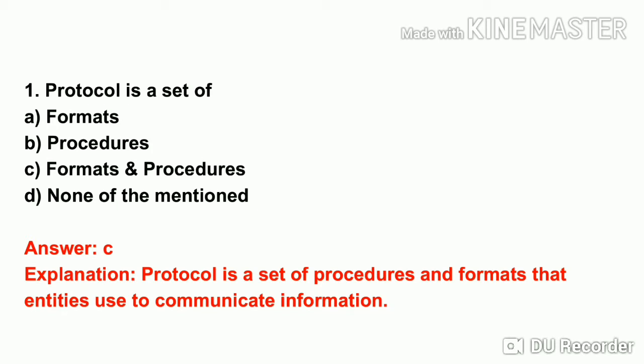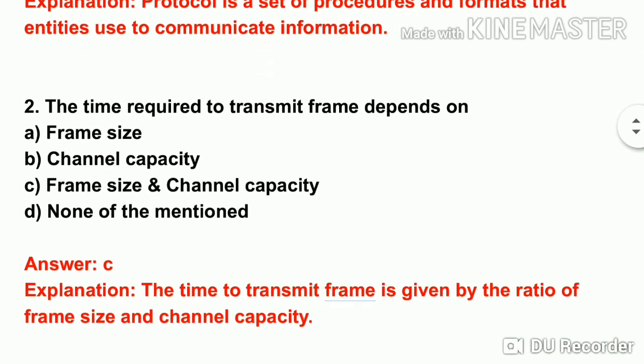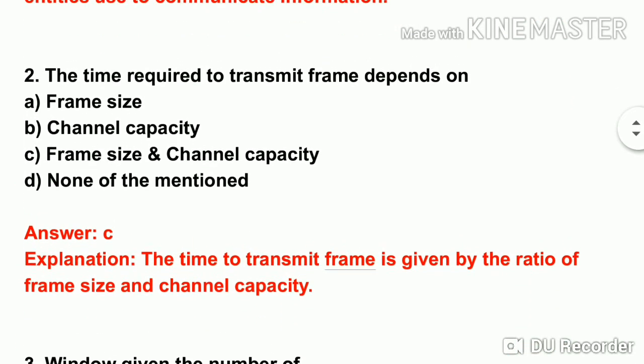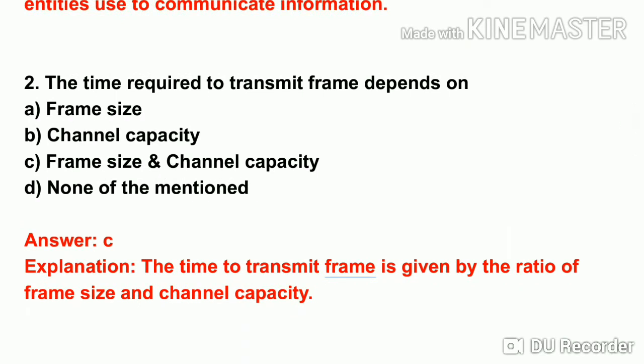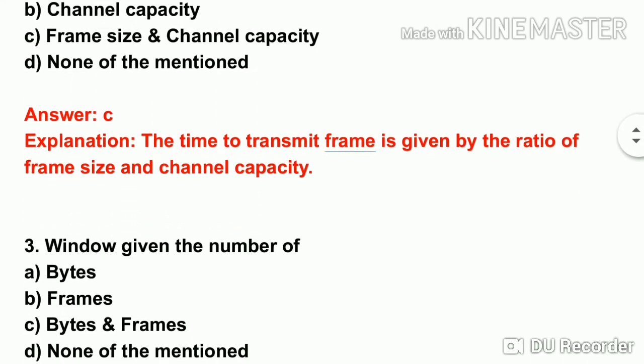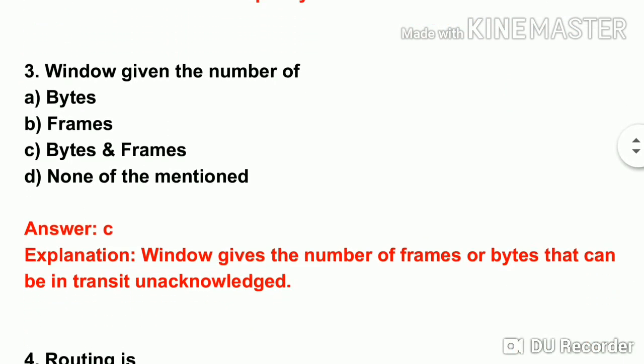The second question: the time required to transmit a frame depends on — with four options: frame size, channel capacity, frame size and channel capacity, or none of the mentioned. To transmit a frame, we consider frame size and channel capacity. So the answer is C. The time to transmit a frame is given by the ratio of frame size and channel capacity.